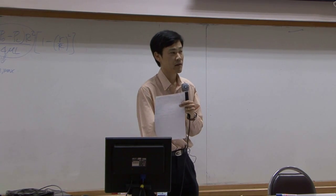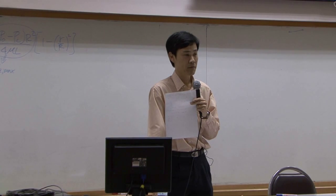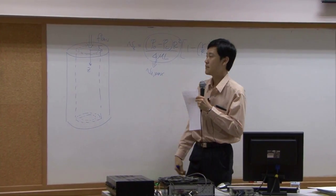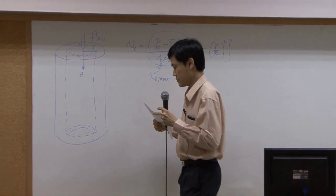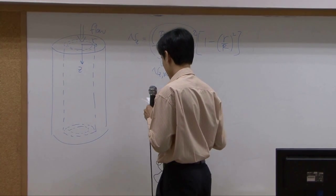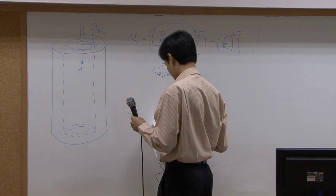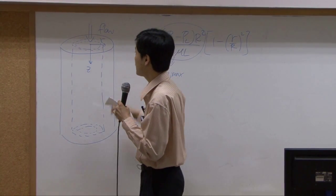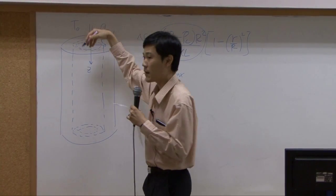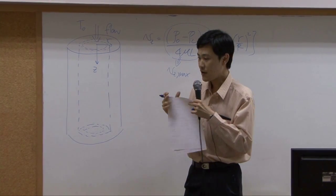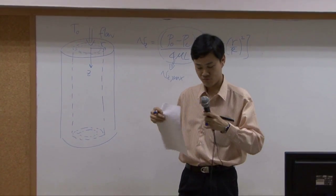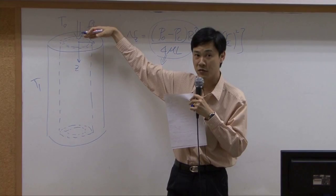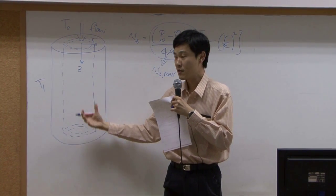The example for today would be what we call a forced flow. There is a vertical pipe where you have water flowing down along the pipe. If the fluid coming into the pipe has a temperature of T0, and the temperature outside is T1, suppose water comes in at T0 and flows through the pipe, with temperature outside being T1.